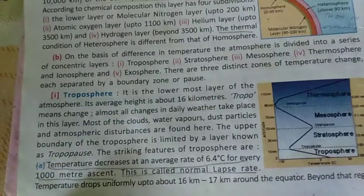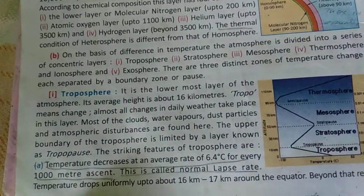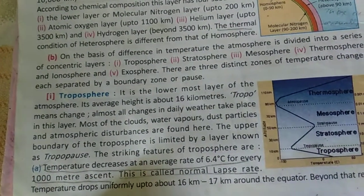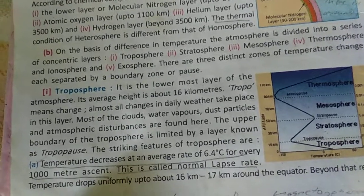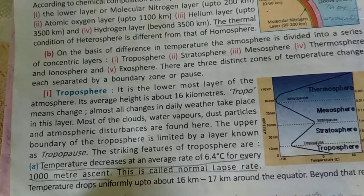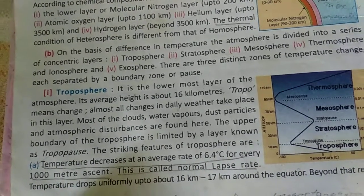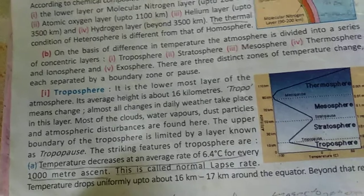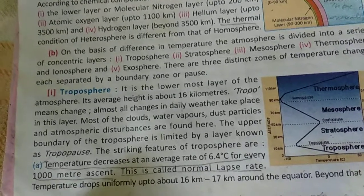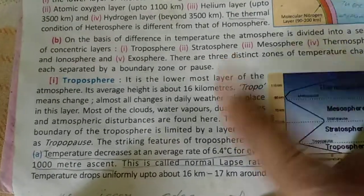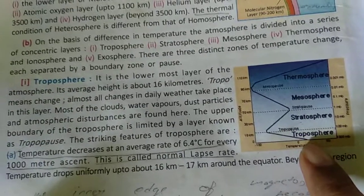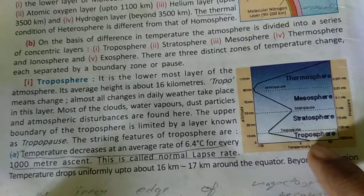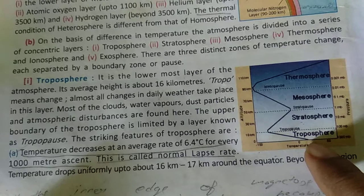There are three zones of temperature that keep on changing, and each zone is divided by a boundary zone or pause. Talking about the troposphere — this is the troposphere — it is the lowest layer of the Earth.